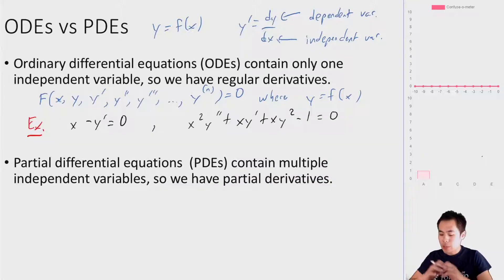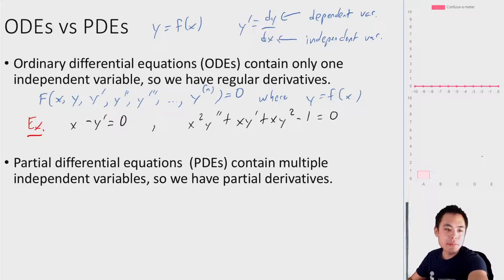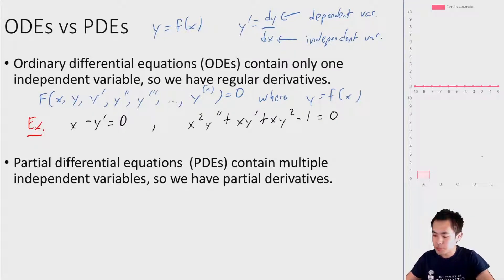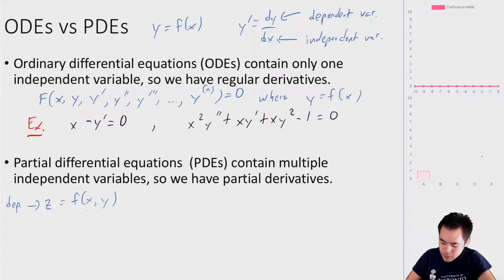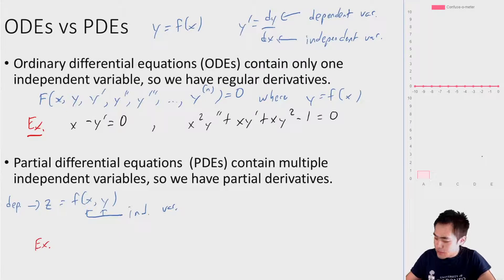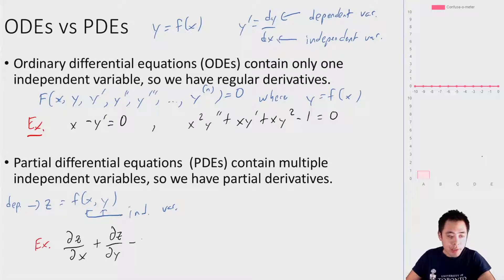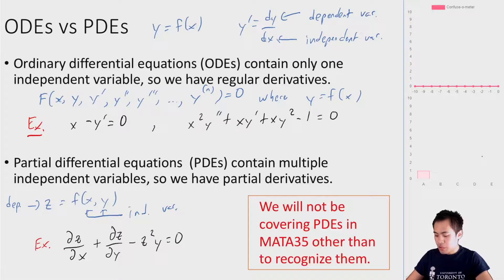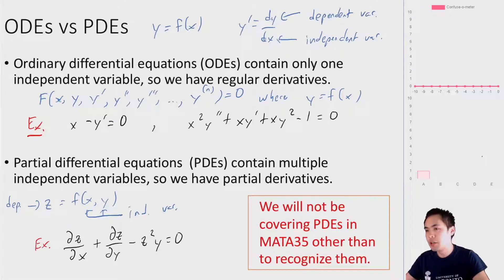For completeness, we also have partial differential equations, which contain multiple independent variables and require partial derivatives. For example, if z = f(x,y) with two independent variables, a PDE might look like ∂z/∂x + ∂z/∂y − z²y = 0. This is an important note: we will not be covering PDEs in MATA35 other than to recognize them. I might ask you to recognize a partial derivative, but we won't be solving these — there are entire courses devoted to PDEs.